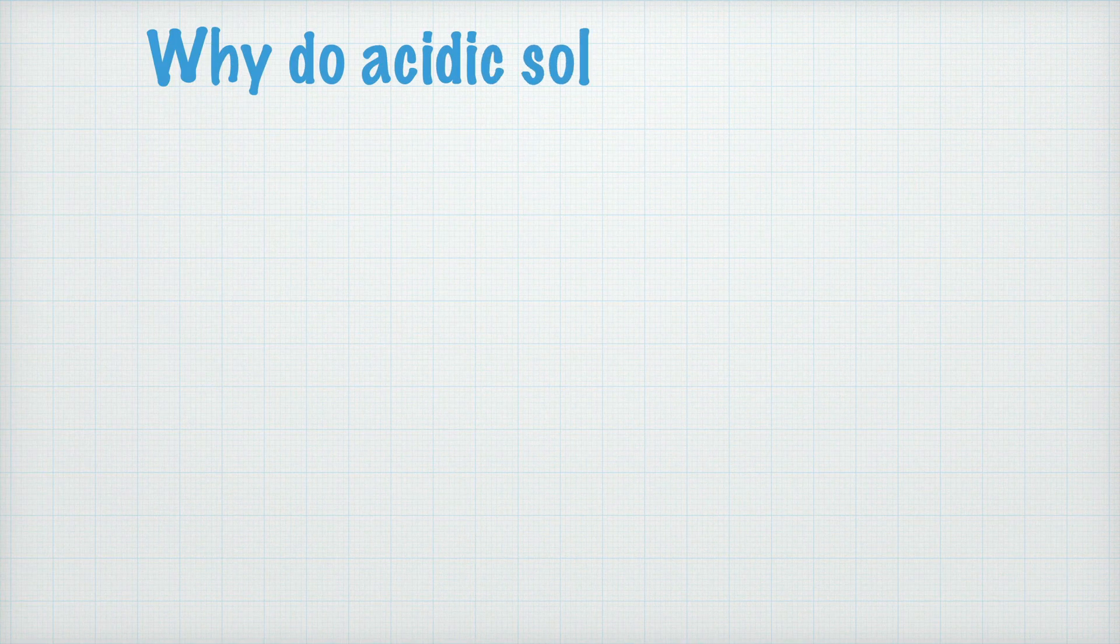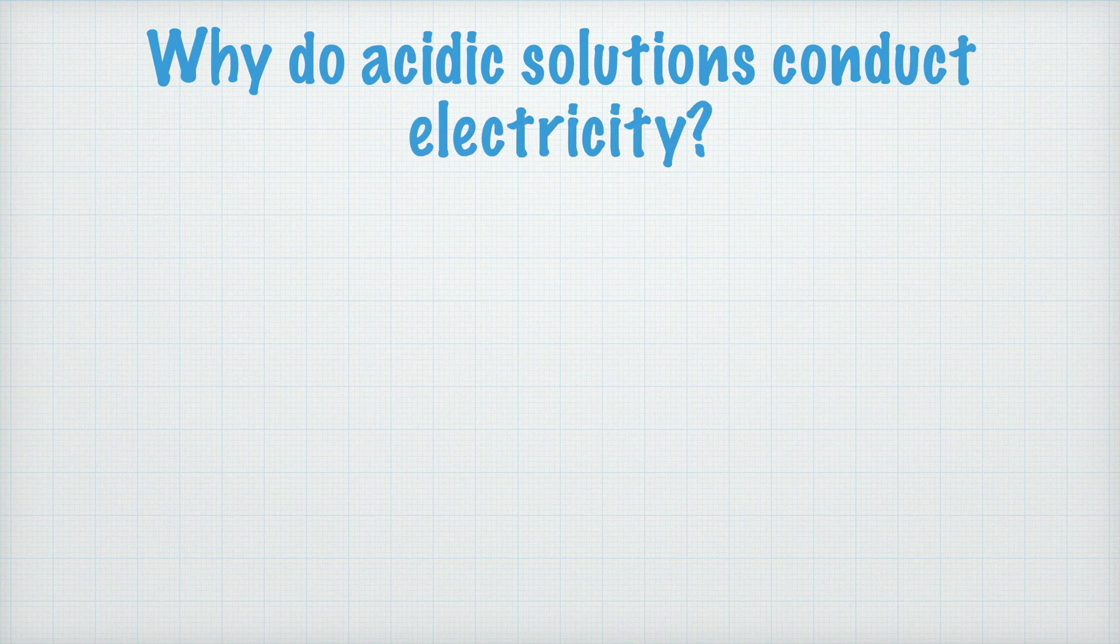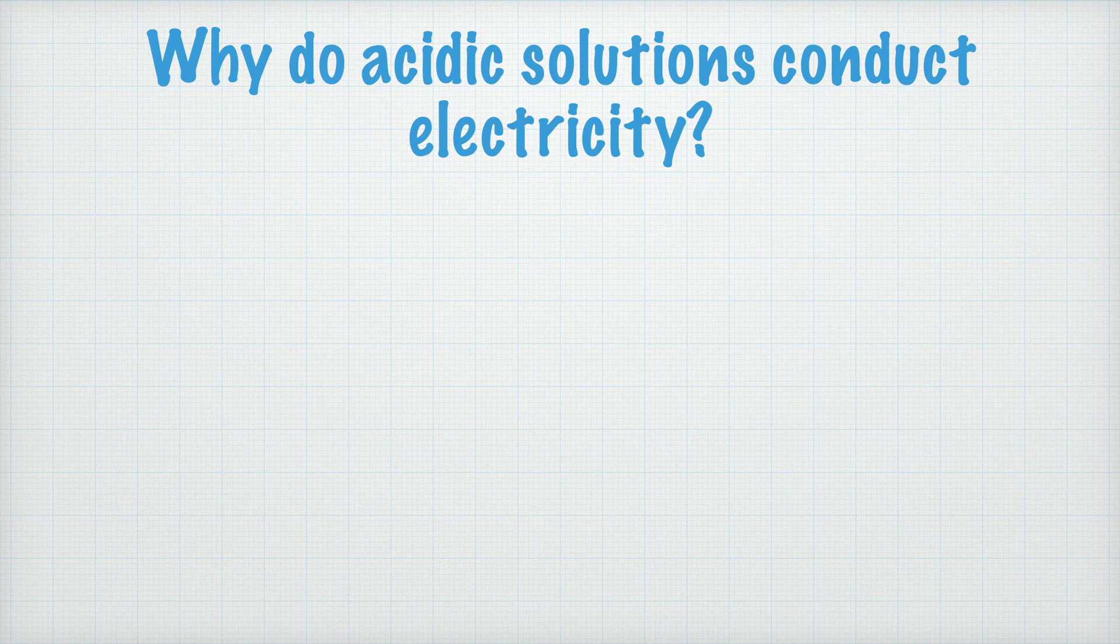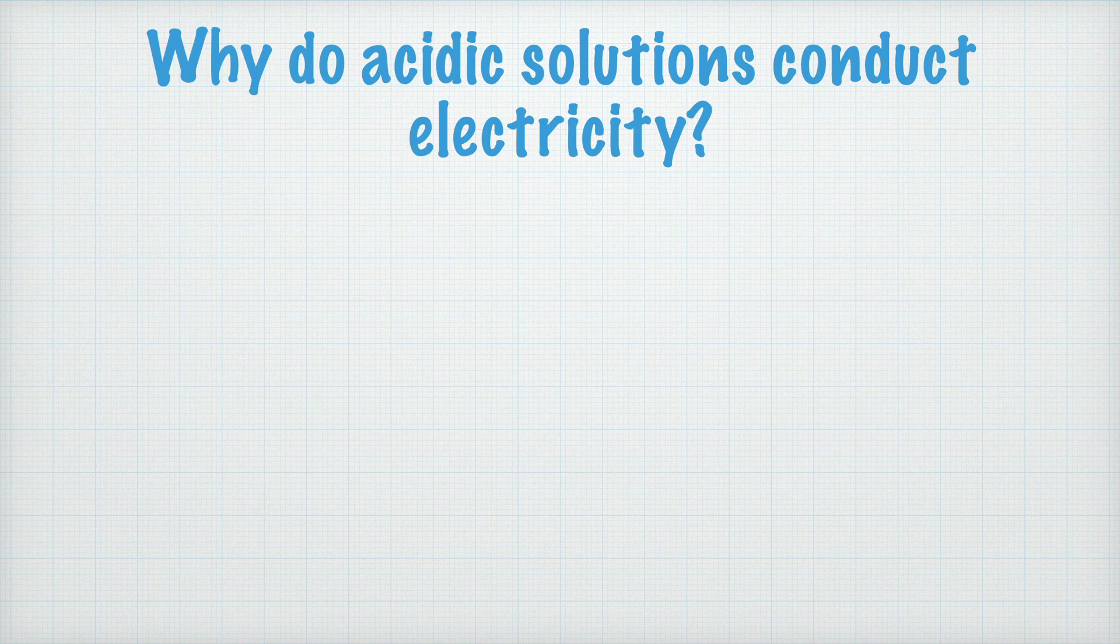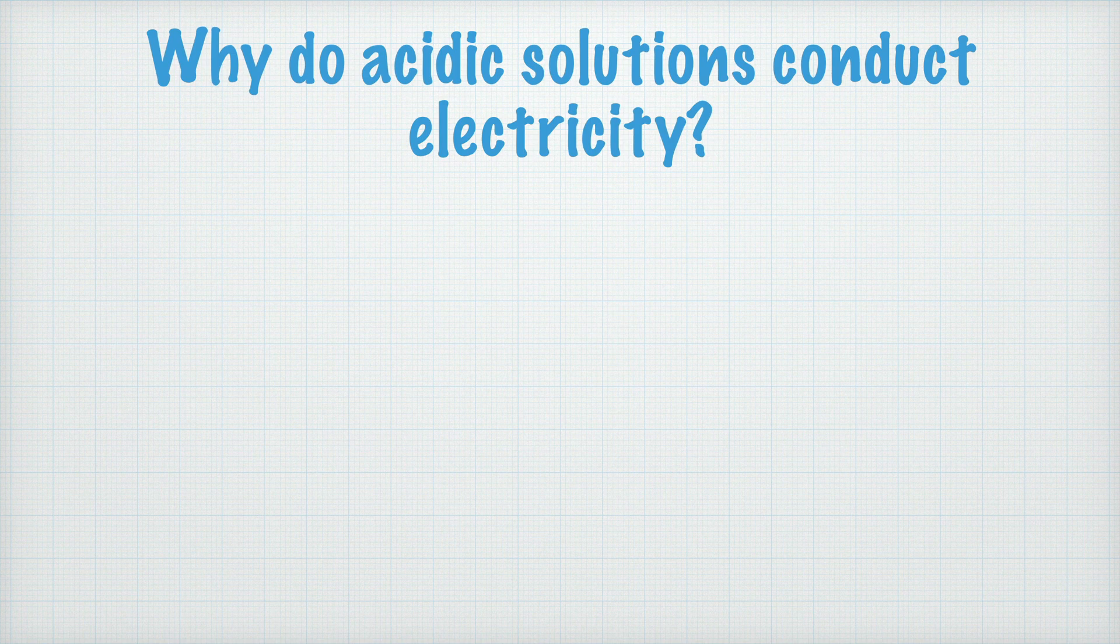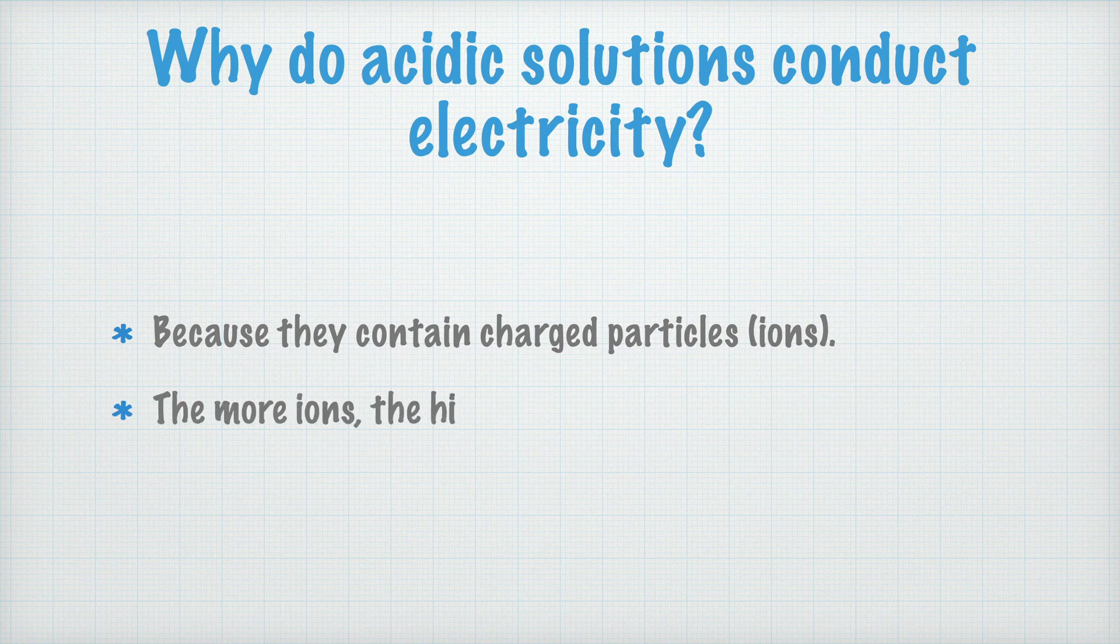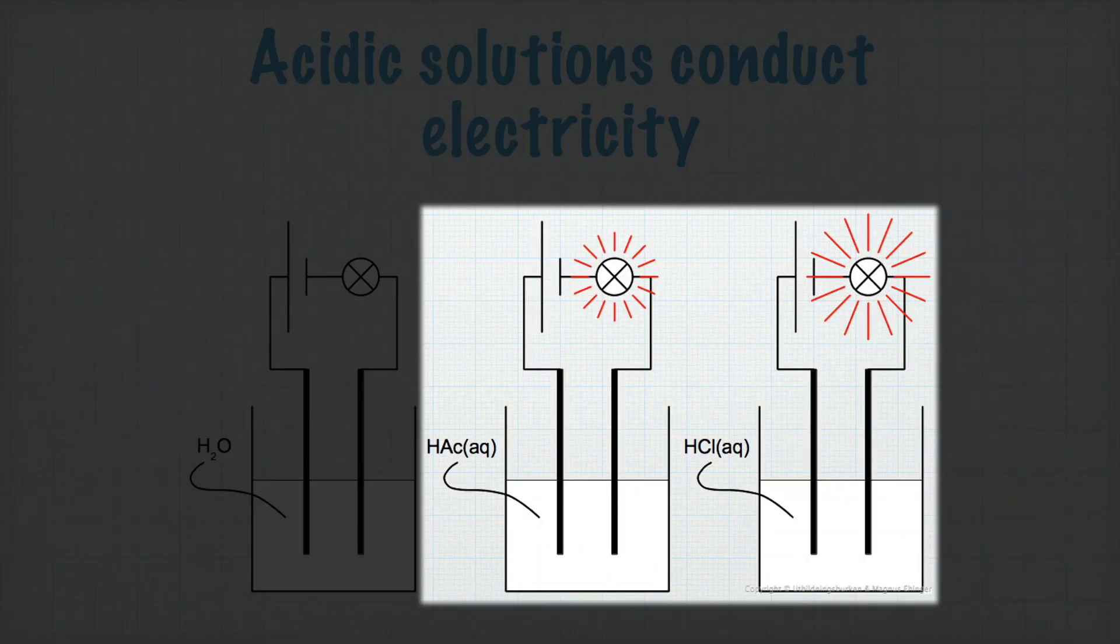But why do the acidic solutions conduct electricity? Well, for something, anything, to conduct electricity, it's necessary that there are mobile charged particles that can carry the current. In a normal copper wire, it is the electrons in the metal that are charged particles that can carry the current. In an acidic solution, there are instead positively and negatively charged ions. The more ions there are in the solution, the better the conductivity. And that's actually the reason why hydrochloric acid is a better conductor. But, as I said, I'll talk more about that in another video.